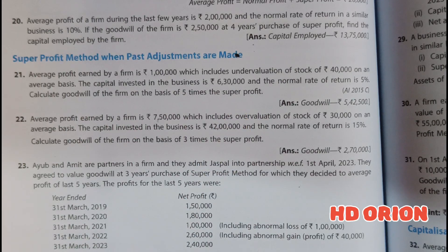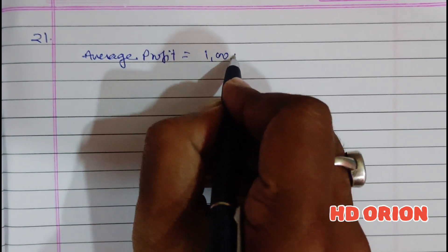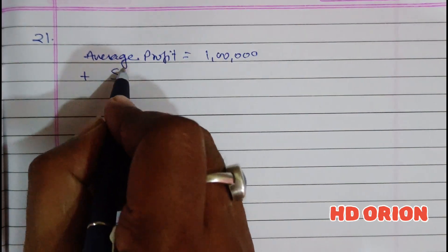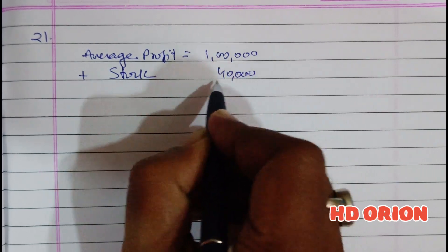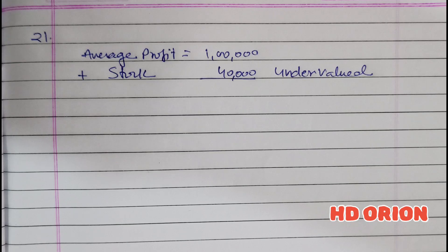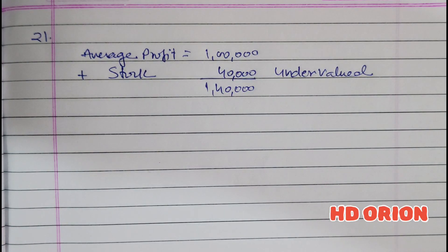Solution 21: Average profit is given as ₹1 lakh, and we will add back undervaluation of stock — that is ₹40,000. Undervalued stock means the stock is written less on the credit side of the trading account, and as a result our gross profit is reduced. When we correct this, the closing stock on the credit side of the trading account will be increased, and as a result the gross profit will increase.